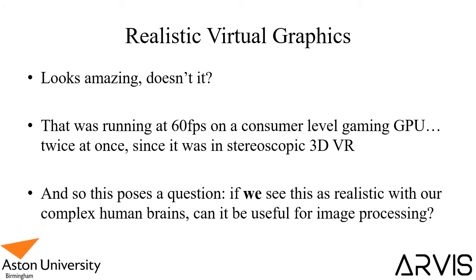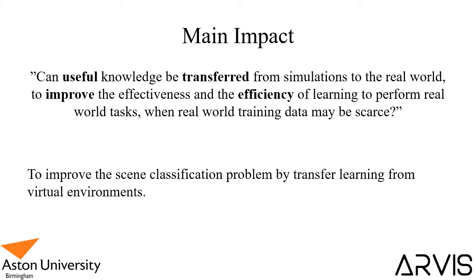This poses a question: if we can see this as realistic with our incredibly complex human brains, can it be useful for image processing and image classification? The main question we want to explore is: can useful knowledge be transferred from simulations to the real world to improve the effectiveness and efficiency of learning to perform real-world tasks when real-world training data may be scarce? We aim to improve the scene classification problem by transfer learning from virtual environments.